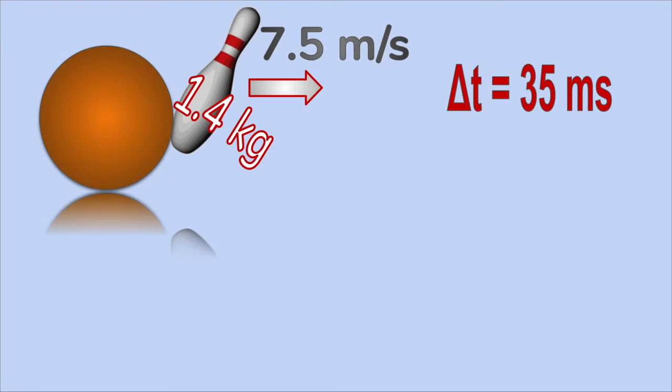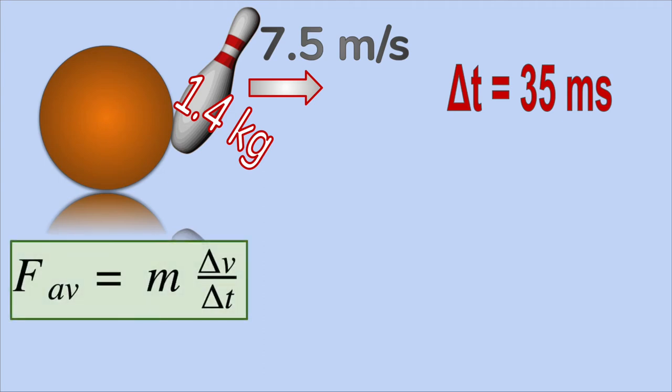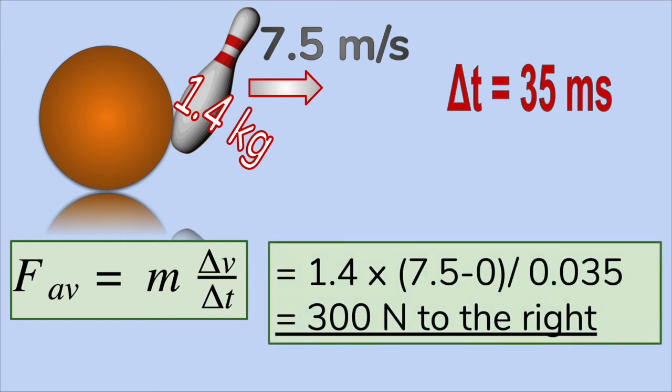We saw this situation in the last video. The bowling pin is knocked to the right at 7.5 meters per second. The additional information we have is that the ball and pin are in contact for 35 milliseconds. This extra fact will help us to calculate the average force that has accelerated the pin.